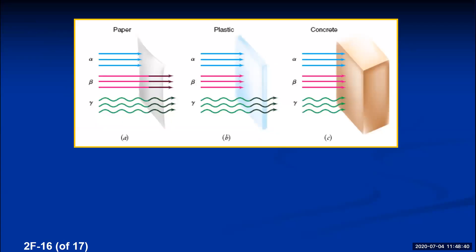To summarize the penetrating ability: alpha particles are stopped by paper or the outer skin layer; beta particles pass through paper but are stopped by a plastic shield; gamma radiation passes through paper and plastic and requires concrete or lead shields to stop it.